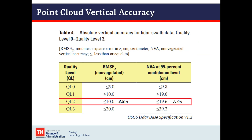Here's an accuracy table taken from the LiDAR base specification table. We have a root mean square error, or RMSE, which is an accuracy measurement between the ground and the point cloud — that is 3.9 inches in a non-vegetated area. We also have a non-vegetated accuracy at a 95% confidence level, which means they're 95% confident that our data falls within 7.7 inches.